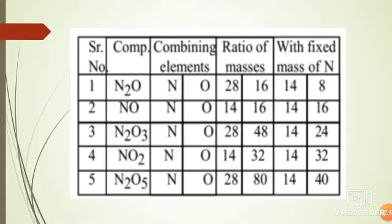This is the example of law of multiple proportions. Here you can see there are oxides of nitrogen like there is nitrous oxide N2O, there is nitric oxide NO, there is nitrogen trioxide N2O3, there is nitrogen dioxide NO2, and there is also nitrogen pentoxide N2O5. The ratio between the weights of oxygen in all the above listed oxides which combine with 14 parts by weight of nitrogen is 8:16:24:32:40.